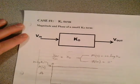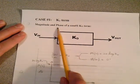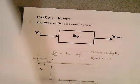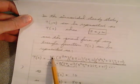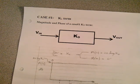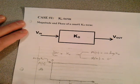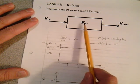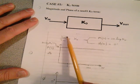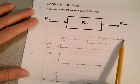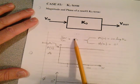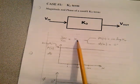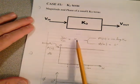Case 1: we're going to look at just the K0 term — magnitude and phase of the K0 term. You have a constant — a gain of 5, or 10, or minus 5, or minus 10. The transfer function is simply K0. V out over V in is K0. The magnitude in dB is 20 times the log of the K0 term, and the angle is zero degrees because it's a real number.